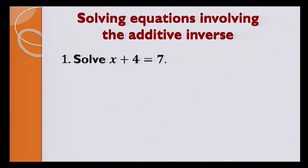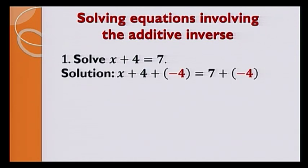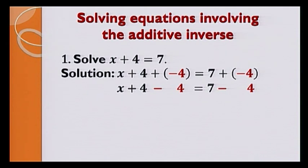Recall that to keep the scale balanced, whatever we do on one side we have to do the same thing on both sides of the equal sign. To eliminate plus 4, we add minus 4 on both sides — the additive inverse of 4. We get x plus 4 minus 4 is equal to 7 minus 4, which gives x is equal to 3. Always keep the good habit of checking your solution. Substituting x equals 3 on the left-hand side gives 7, which equals the right-hand side, so the statement is true.